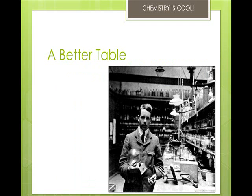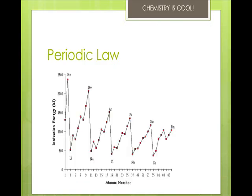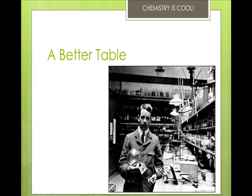By the mid-1800s, about 70 elements were known to exist. Dmitry Mendeleev, a Russian chemist and teacher, arranged the elements in order of increasing atomic mass. This was the first periodic table. He left blanks for yet undiscovered elements. When they were discovered, elements such as cobalt, nickel, and argon were found to have matched his predictions well.